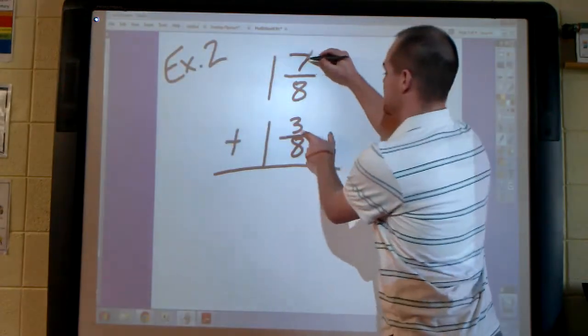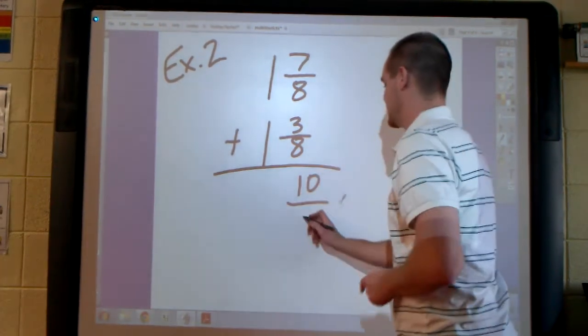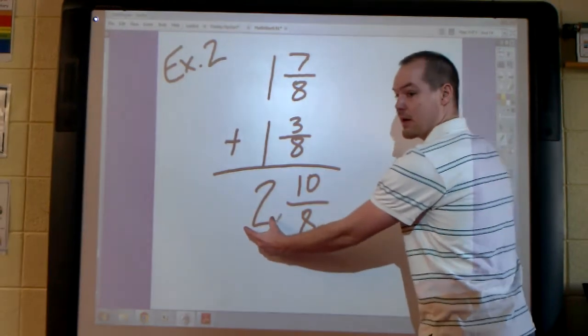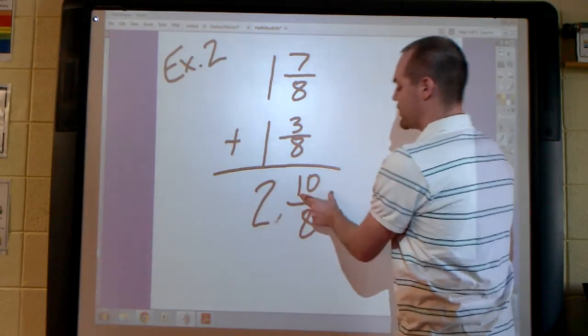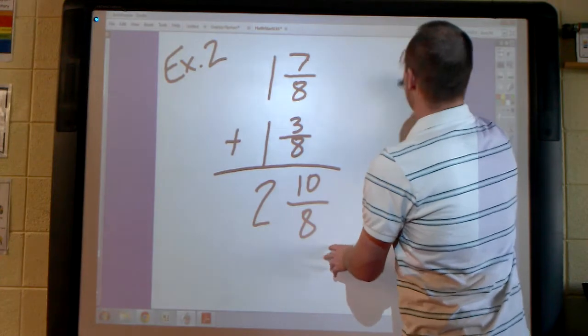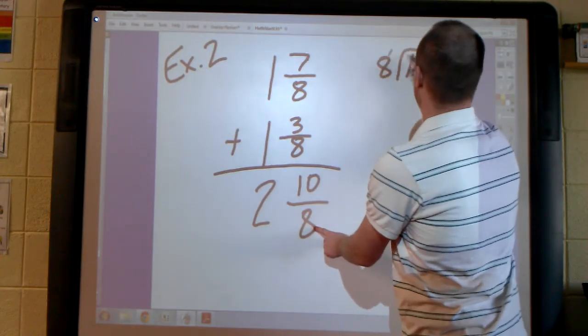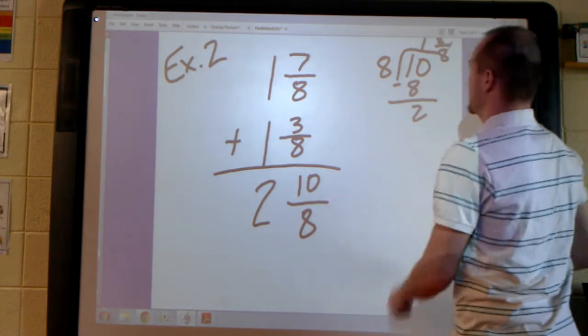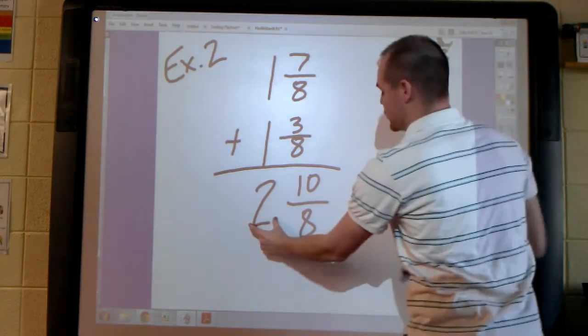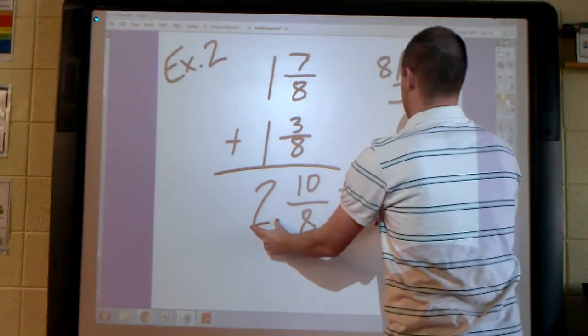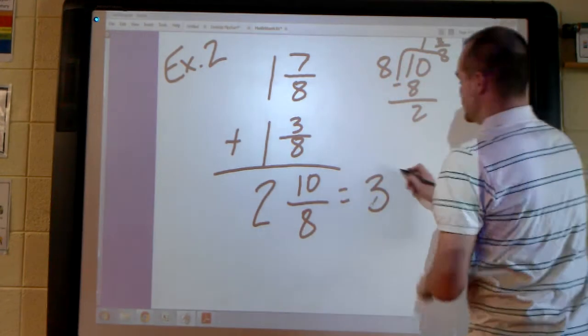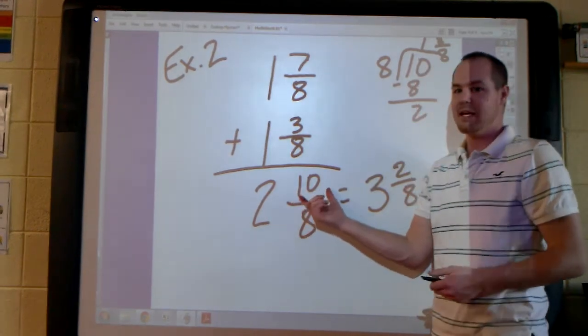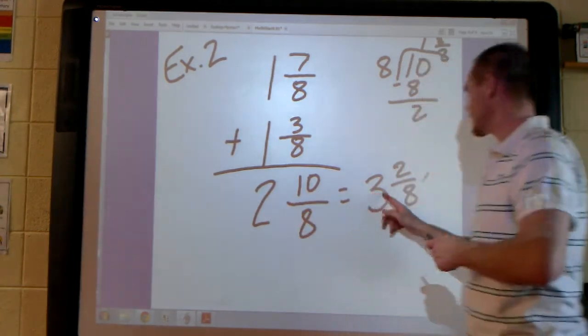Adding numerators together, 7 plus 3 is 10. 8 does not change. 1 plus 1 is 2. What I end up with here is a mixed number with an improper fraction. I leave the 2 alone for now. I divide 10 by 8, and I get 1 and 2/8. So what I do with my whole number is add it to my 2. So 2 and 10/8 equals 3 and 2/8. Which makes sense because we took 8/8 out of this and we have 2/8 left. 8/8 is equal to 1 whole, and that's exactly what we have left.